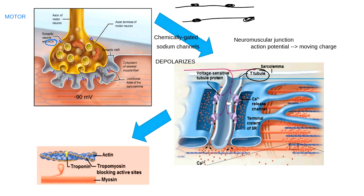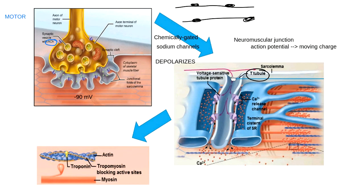T-tubules are places where the plasma membrane of the muscle cell — called the sarcolemma — is folded into little tubes. The sarco prefix always means muscle. These T-tubules are put everywhere inside the muscle cell, basically providing another surface for the action potential to move across, including down into the middle of the muscle cell, ensuring every part of the cell gets the signal to contract.